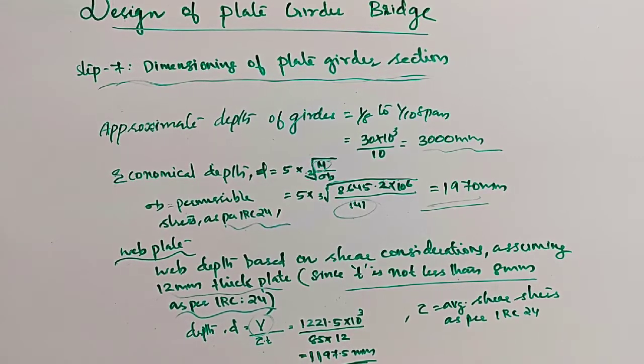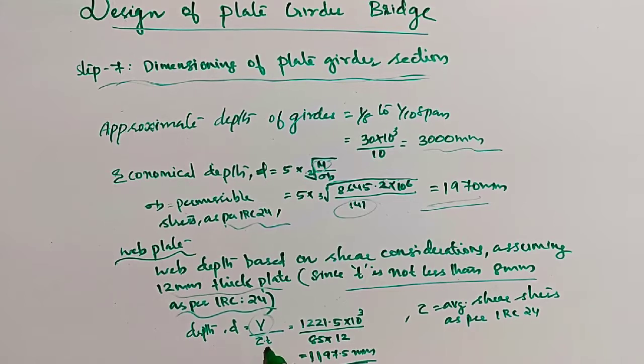Where V is shear force, tau is average shear stress as per IRC, tau equals 85, and T is thickness.